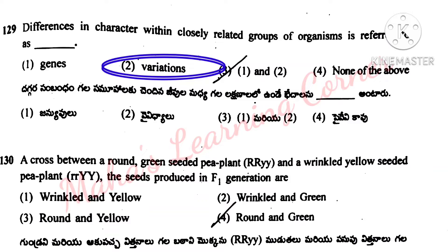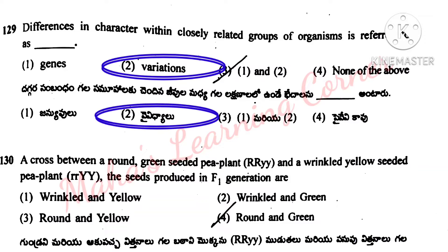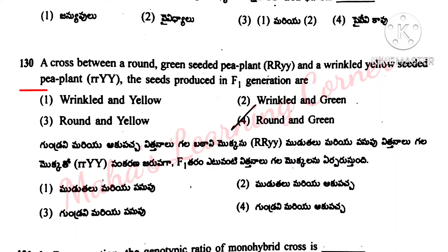Organisms within a group that share common characteristics but show differences in traits are called: genes, biodiversity, bacteria, none of the above. Correct answer option 2: biodiversity.